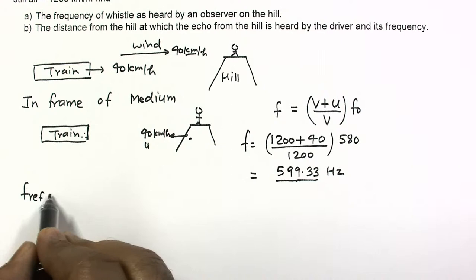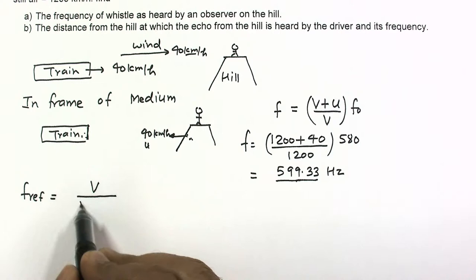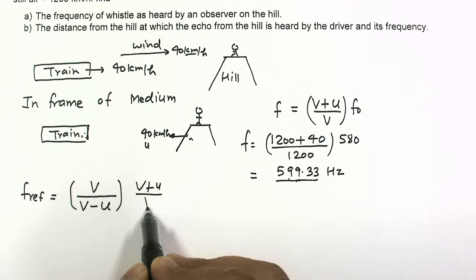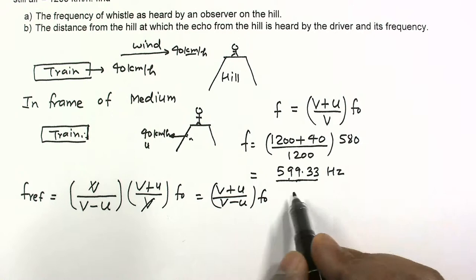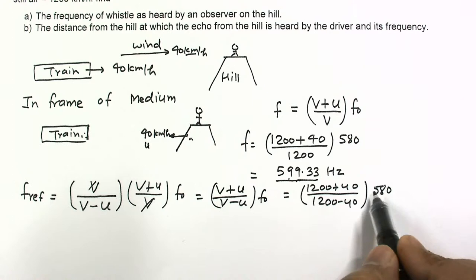For the reflected frequency: the hill is the source and the driver is the observer. The source is moving towards the observer, so the denominator becomes v minus u. The formula gives v plus u divided by v minus u, into f₀. Substituting the values and on canceling, this becomes v plus u divided by v minus u into f₀. On solving, this comes out to 620 Hz.